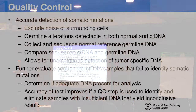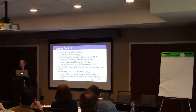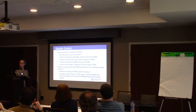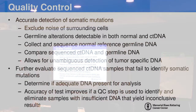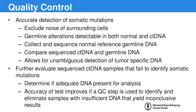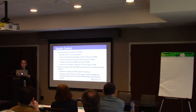It's important when developing ctDNA in any disease setting to look at quality control and ensure we are accurately detecting somatic mutations, excluding noise from other cells. Germline alterations are detectable in both normal and circulating tumor DNA, so it's important to collect and sequence both normal DNA and tumor DNA, compare them for unambiguous detection, and further evaluate ctDNA samples that fail to identify somatic mutations — is this because of inadequate DNA in the sample?